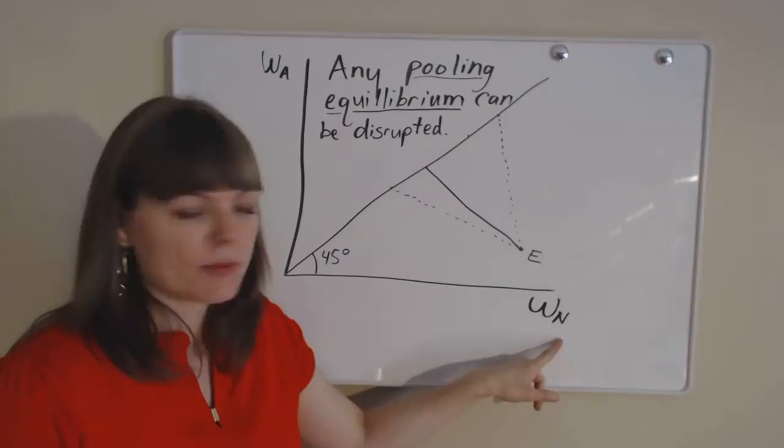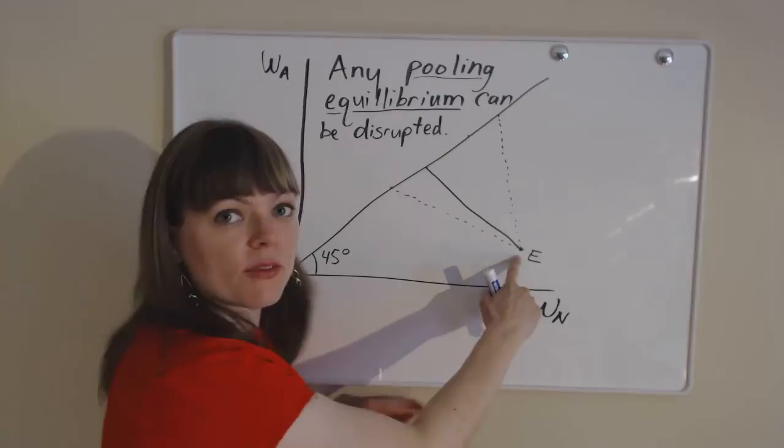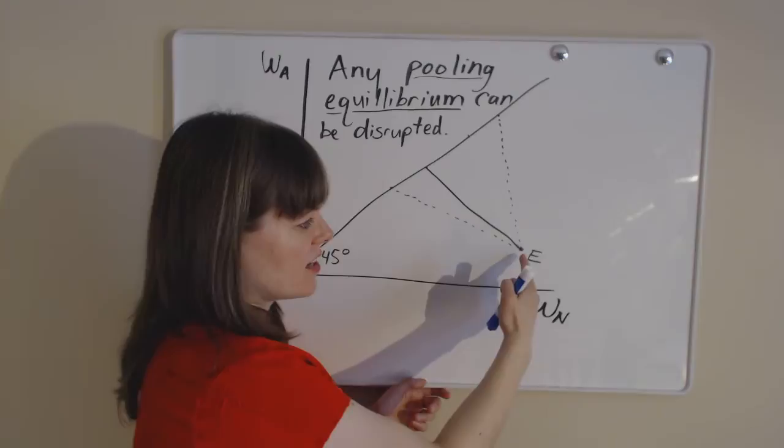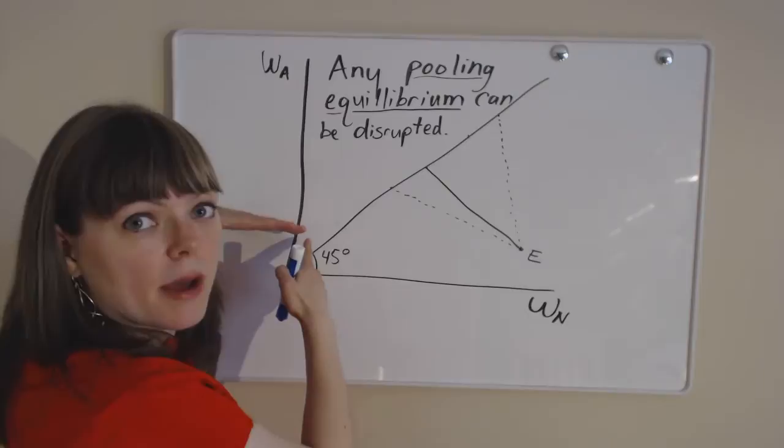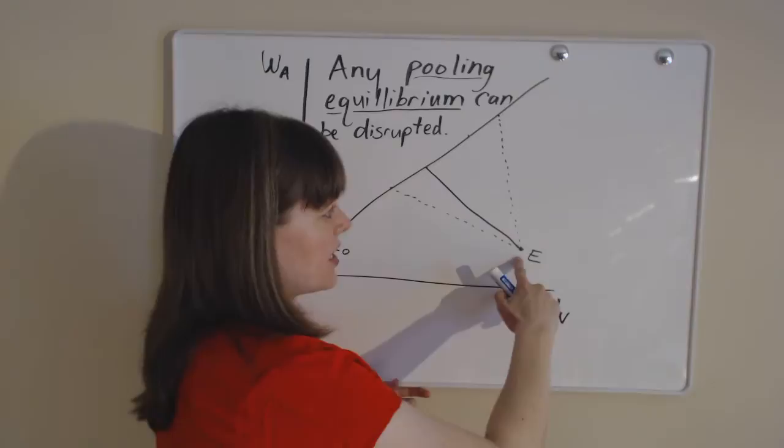We have our axes labeled as usual. We have wealth in the non-accident phase and wealth in the accident phase. We have our point E, which represents our uninsured state. So we make $40,000 in the non-accident state, and on our y-axis here we have $40,000 minus the amount of money that an accident costs in this world.